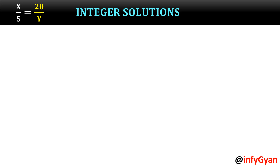Hi, welcome to Infigyan. Today we are going to solve one equation for which we have to find out the integer solutions or number of ordered pairs. The equation is x over 5 is equal to 20 over y. We will not only find the number of solutions but also exactly what solutions are coming.